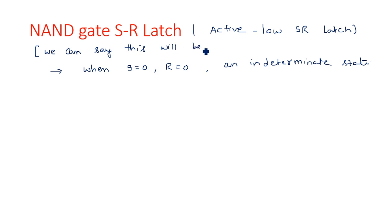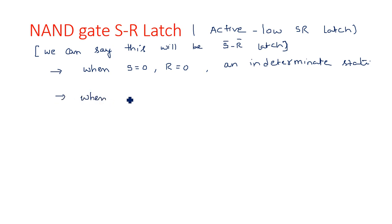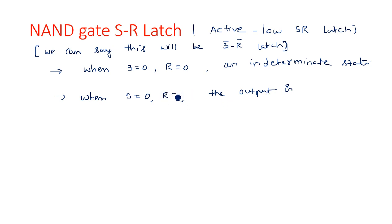This is the S-bar R-bar latch because all the cases here are in the reverse order. The indeterminate state we obtained in the NOR gate SR latch was for S equal to 1, R equal to 1. When S is equal to 0 and R is equal to 1, the output will be set — because R is equal to 1 means the output should be reset to 0, but here the output is set.